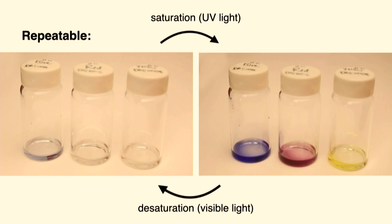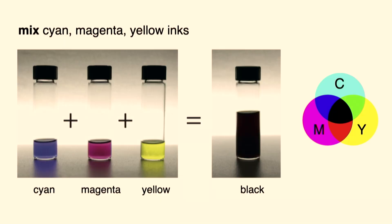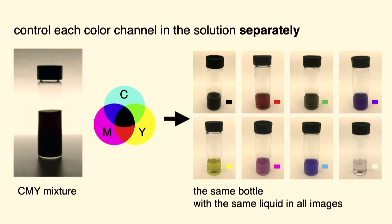The process is fully repeatable: you apply one wavelength and they saturate; you apply a different wavelength and they desaturate. Normally you can only buy them in a single color, so you'd only be able to do different shades of cyan, for instance. So how can we achieve multicolor textures? The idea is that we mix cyan, magenta, and yellow together — this should sound familiar from your inkjet printer — and we get a black ink.